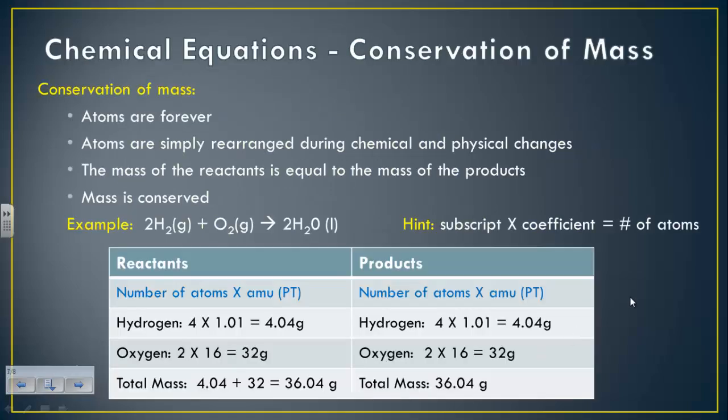In a properly balanced chemical equation, you're going to see the conservation of mass because atoms are forever. They're just rearranged when they undergo a physical or chemical change. So the mass in your reactants should equal the mass of your product. We have this example of the production of water. We have hydrogen gas reacting with oxygen to produce water. Here's a hint. To figure out the mass of each element, you take the subscript times the coefficient, and that will equal the number of atoms.